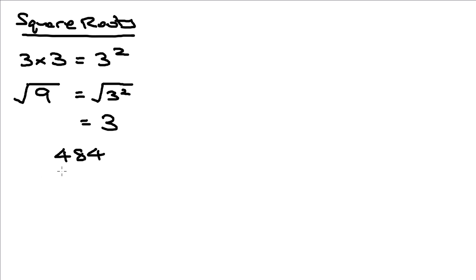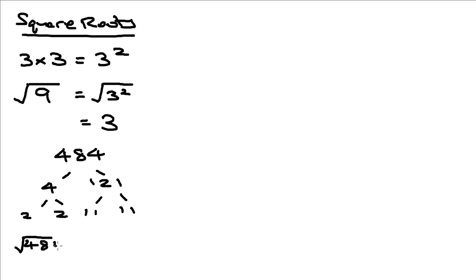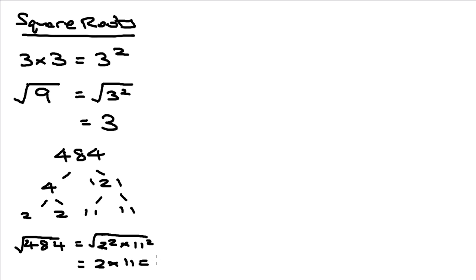For example, we have the number 484. By prime factorization, 484 breaks down to 4 and 121; 4 is 2 times 2, and 121 is 11 times 11. So the square root of 484 is the same as the square root of 2 squared times 11 squared. The square root cancels the squares, leaving 2 times 11, so the square root of 484 is 22.